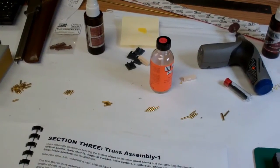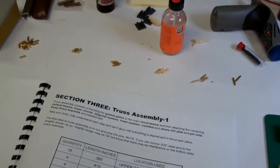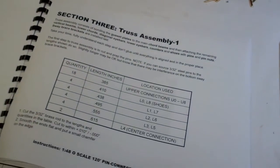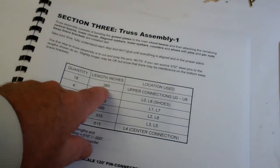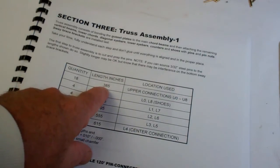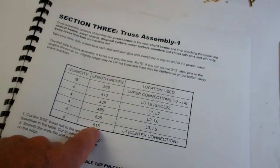They are all identified with quantities. Everything from .385 inches, there are 18 of them, all the way down to .615 inches.